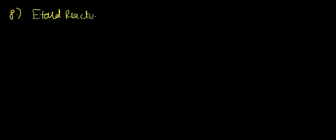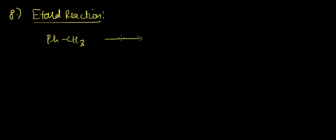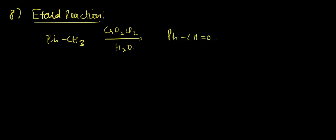In the Etard reaction, we start with toluene. From toluene, we pass CrO2Cl2 and water, and we'll be getting an aldehyde.